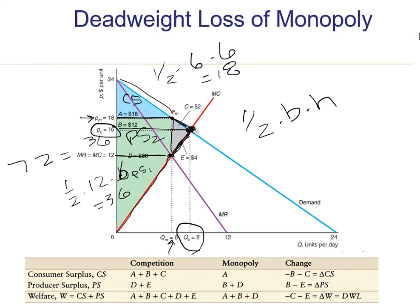Again, it's a triangle. 1/2 base times height. And so the height of this triangle is from 12 to 18. The height of that triangle is 6. The base of that triangle is 2. So half of 2 is 1 times 6 is 6. It's a deadweight loss for this monopolist.